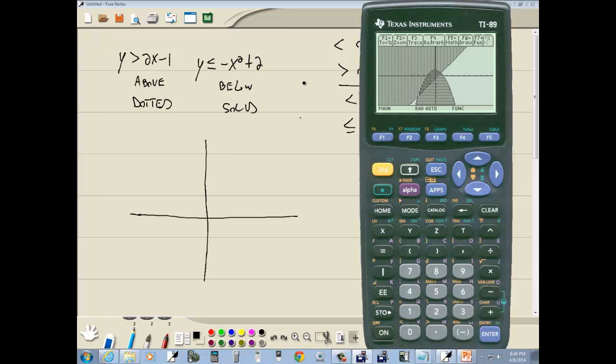Keeping in mind that the negative x squared, this curved part should be a solid line. This other one's a dotted.